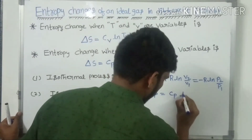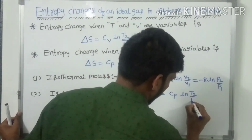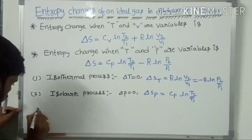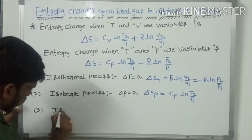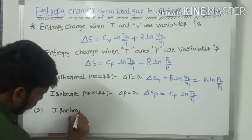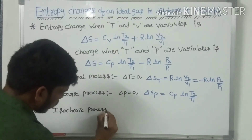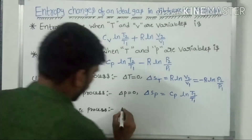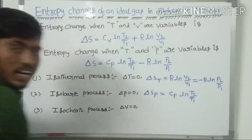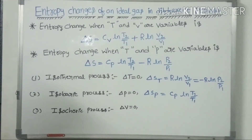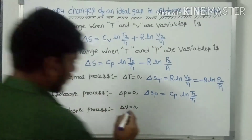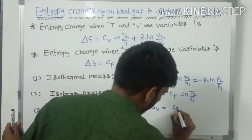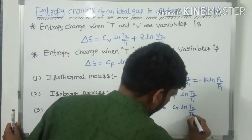Another one is the isochoric process. In the isochoric process, the change in volume is equal to 0, therefore delta V is equal to 0. Therefore the entropy change is given by Cv ln(T2/T1).